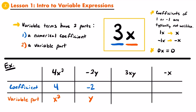Moving on to 3xy, the coefficient would be 3 — that is the numerical value in front of the variables. The variable part is both x and y: the multiplication of x and y together makes up the variable part. And finally, for negative x, remember that when you have a coefficient of negative 1, we typically just write it as a negative sign in front of the variable. So the correct coefficient here is negative 1, which then just leaves us with x for the variable part.